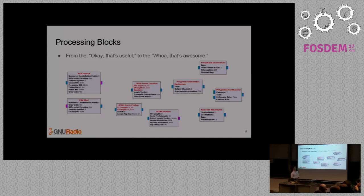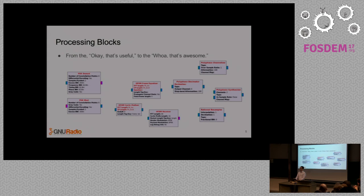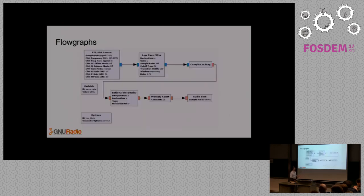I have some examples up here — OFDM cyclic prefix blocks. For those not familiar with wireless communication standards, OFDM is what's used in 802.11 Wi-Fi and LTE, that sort of thing. The variety of blocks in the project is fantastic, and it's only extended by all the work done in the community through what are called out-of-tree modules, which I'll cover in a second.